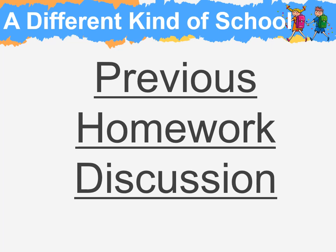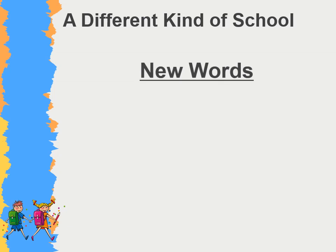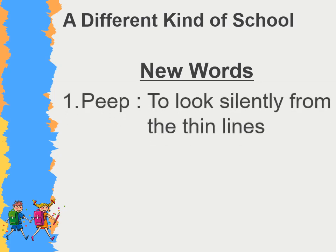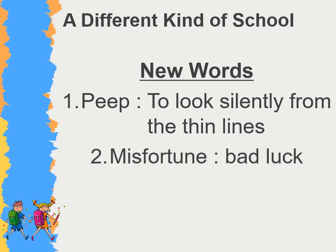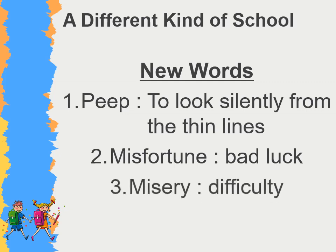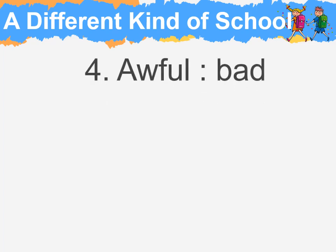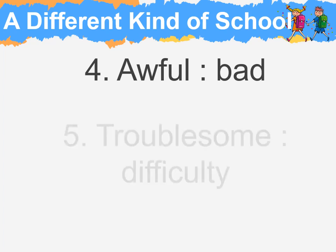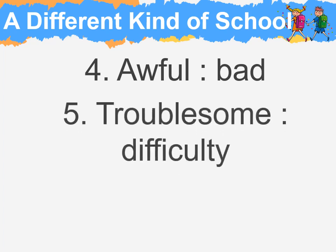Now we are going to discuss the previous homework assigned in the previous class. We shall begin with new words. Please write the name of the school and make a correction work column on the right-hand side. Number 1: Peep means to look silently from thin lines. Number 2: Misfortune means bad luck. Number 3: Misfortune means difficulty. Number 4: Awful means bad. Number 5: Troublesome means difficulty.